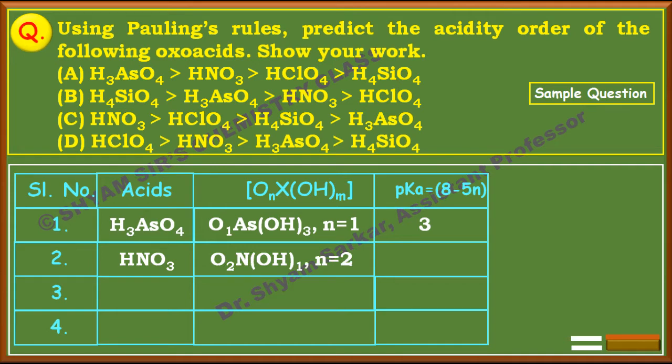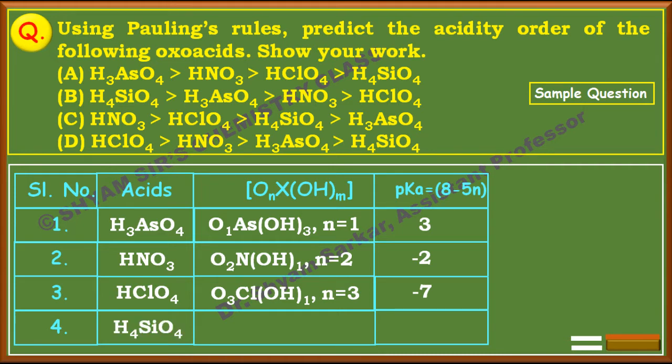For the next acid, HNO₃, n = 2, so pKa = 8 − 5×2 = −2. For HClO₄, it can be written as O₃Cl(OH)₁, so n = 3. Putting n = 3 into the formula gives pKa = 8 − 5×3 = −7.